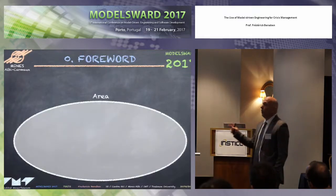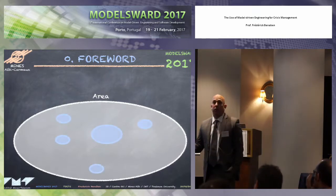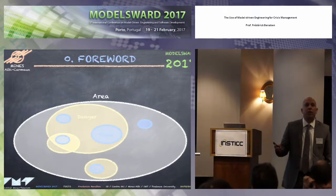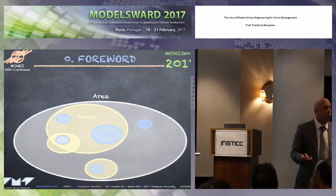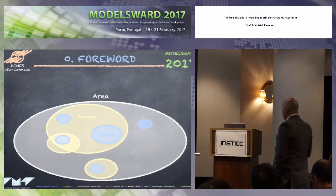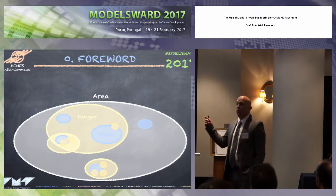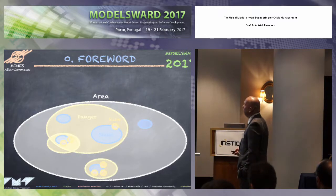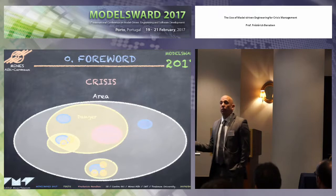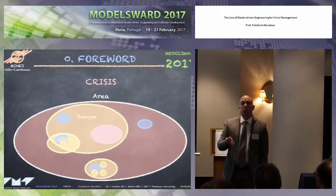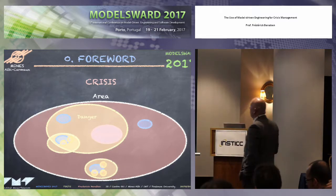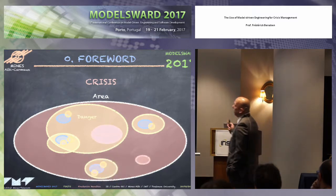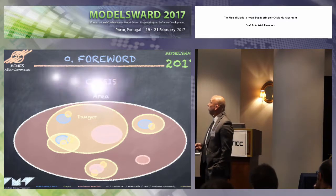If we consider an area in which there are some stakes — just like buildings, people, networks — there are also associated dangers, intrinsic dangers, because that may be a seismic area, because the social climate is not so good. There may also be some risks associated to these dangers on these stakes. And if some of these risks materialize, we move into a crisis situation with new emerging risks, new emerging dangers, and new consequences. This is the case where we should move to crisis management.